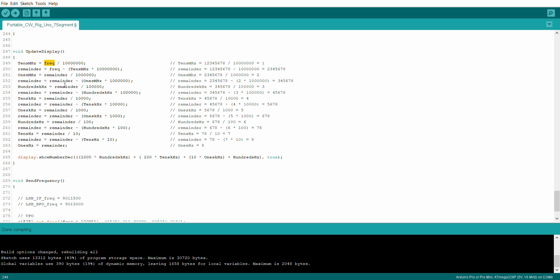So by going through that, I end up with a number for hundreds of kilohertz, a number for tens of kilohertz, one kilohertz, et cetera. And then what I can do to display it. So display dot show number in decimal. I then have to create the number. And that's what that's doing there. So a thousand times hundreds of kilohertz plus a hundred times tens of kilohertz plus ten times one kilohertz plus hundreds of hertz gives me those four digits that I then display on the display itself.